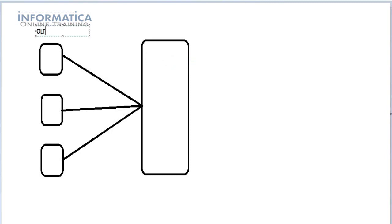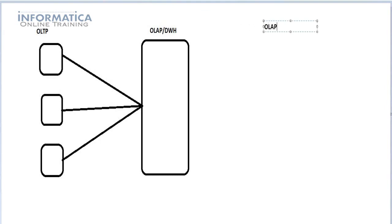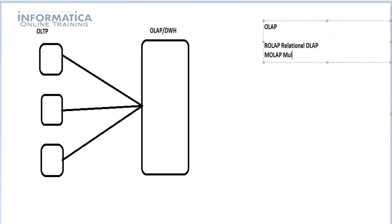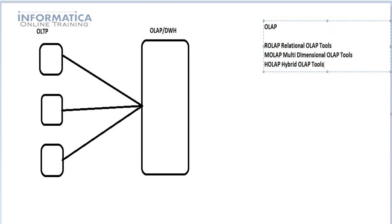So these are all the OLAP systems. One of the systems is where we load the data into the OLAP — that's nothing but a database host. This is called the OLAP database. When performing reporting, we use different OLAP tools, which are divided into three types: relational OLAP, multidimensional OLAP, and hybrid OLAP tools.